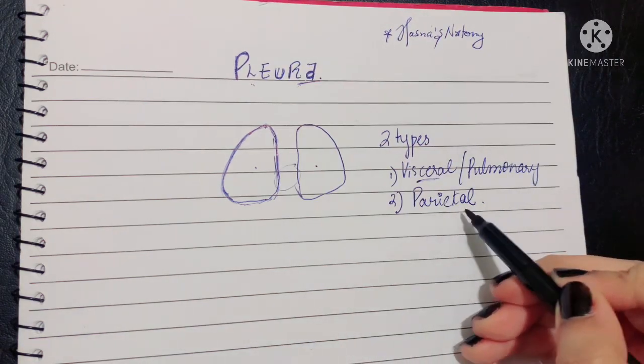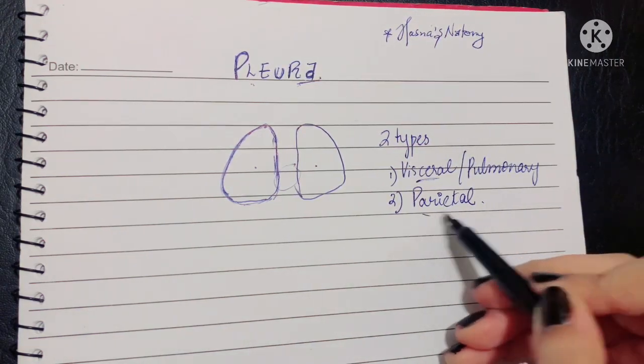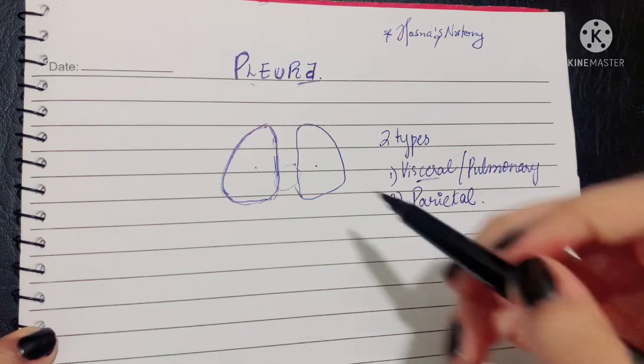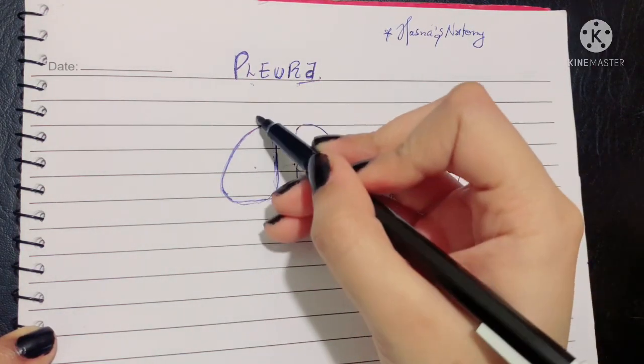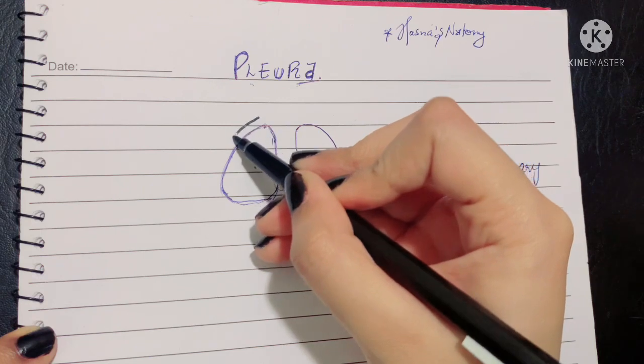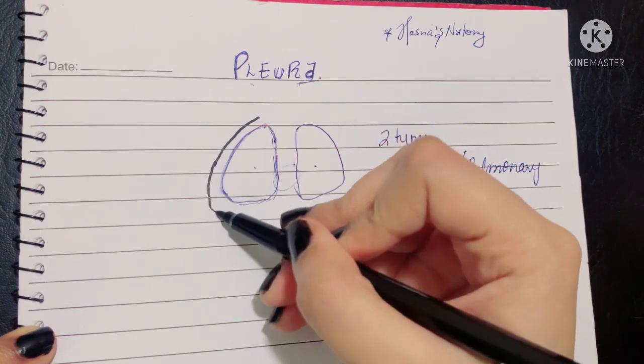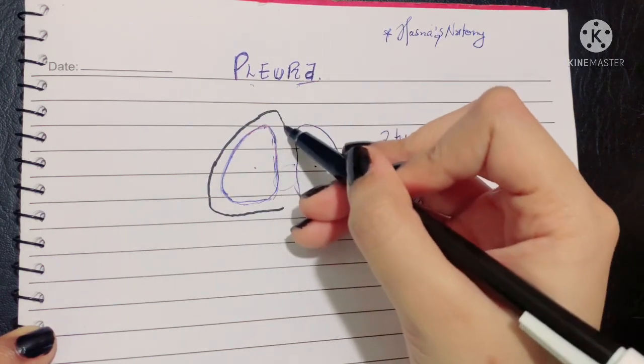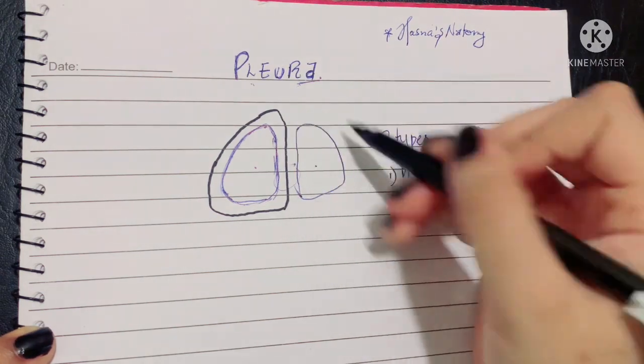Then there is the parietal pleura. Wherever the word parietal is seen, it is the outer covering. So there is the visceral pleura, and right outside it, all around the margins of the lung, lies the parietal pleura. It is the outer covering of the lung on both lungs.